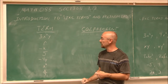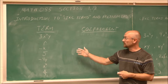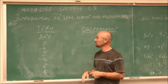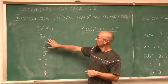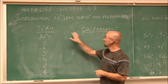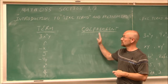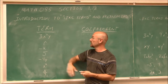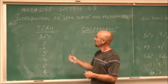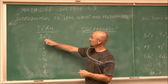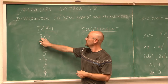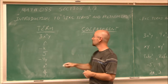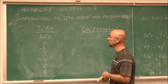Here we have a series of monomials, which are a special type of polynomial. We want to determine the numerical coefficient — we're just looking at the numbers. For the first term, I see the number 3. So these are the variables, and its numerical coefficient is 3.